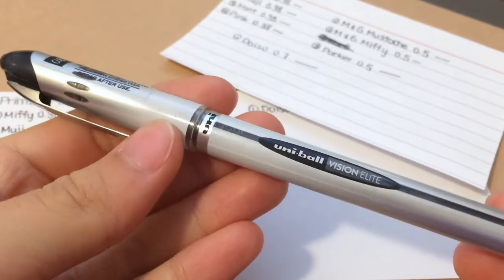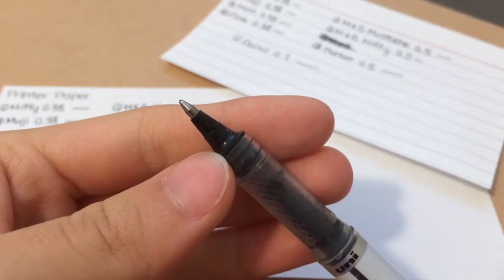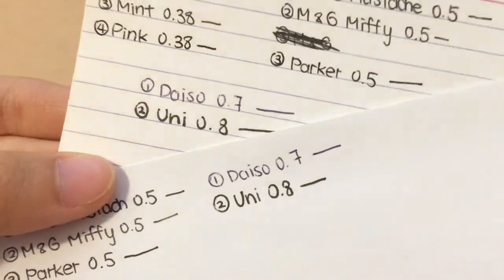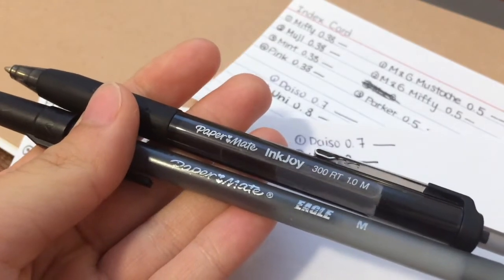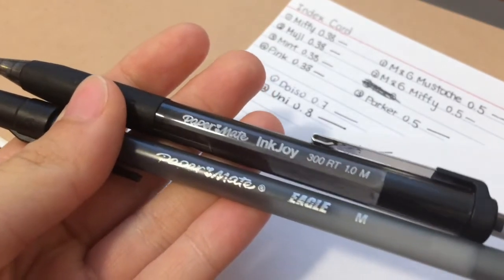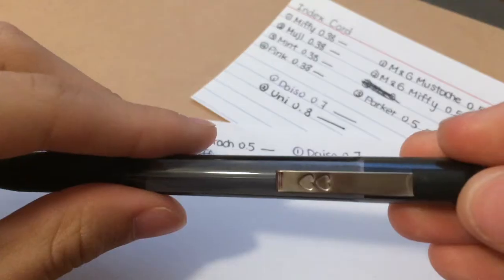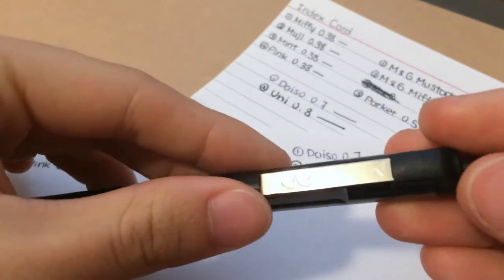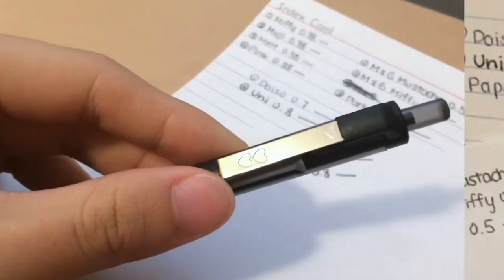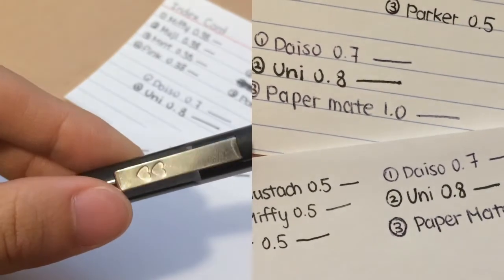Then I have this Uni Ball Vision Elite 0.8 pen. It's really thick compared to all the other ones. Finally we have these two Paper Mate pens. They are similar color and one of them is called InkJoy and the other one is Eagle. So we're just gonna test out the InkJoy one and this one has like hearts on the side which is really cute.